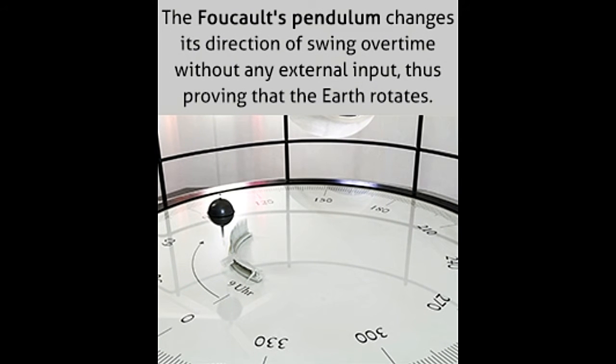In 1851, Foucault devised an innovative experiment to verify the Earth's rotation. His main apparatus was a large pendulum, which later came to be known as the Foucault Pendulum in his honor.